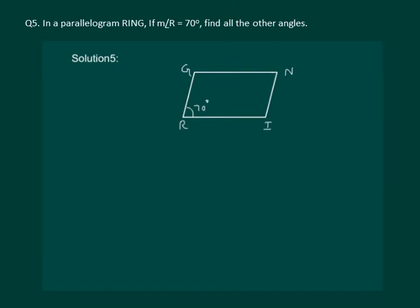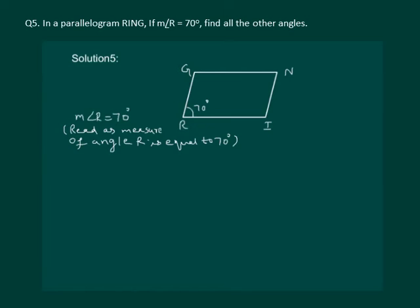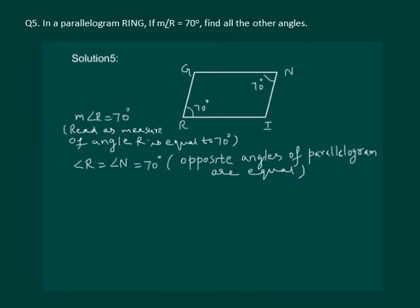Let us read the question. In a parallelogram RING, measure of angle R is 70 degrees. Find all the other angles. We are given that measure of angle R is 70 degrees. Then by the property that opposite angles of a parallelogram are equal, angle N will also be 70 degrees. We also know that adjacent angles are supplementary. That means angle R plus angle I should be equal to 180 degrees. Similarly, angle N plus angle G should be equal to 180 degrees.